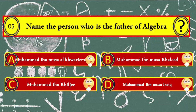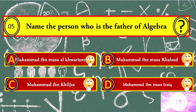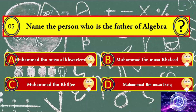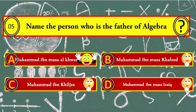Question number five: name the person who is the father of algebra. Your options: A) Muhammad ibn Musa al-Khawarizmi, B) Muhammad ibn Musa Khalid, C) Muhammad ibn Khalji, and D) Muhammad ibn Musa Ishaq. Muhammad ibn Musa al-Khawarizmi is the right answer.